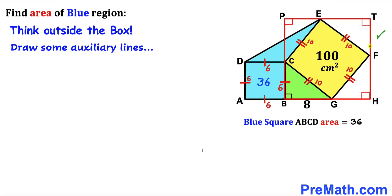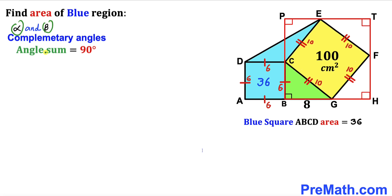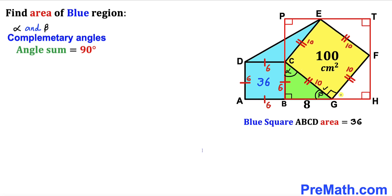I have constructed square BHTP that passes through points G, F, E, and C. Let's assume alpha and beta are two complementary angles, meaning alpha plus beta equals 90 degrees. Focusing on the green triangle: one angle is alpha, one is 90 degrees, so the third must be beta. From there, since one angle is 90 and the adjacent is beta, the next angle must be alpha.